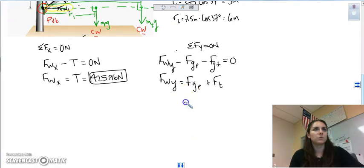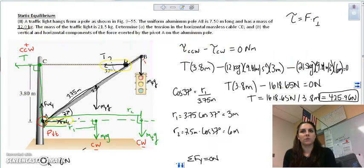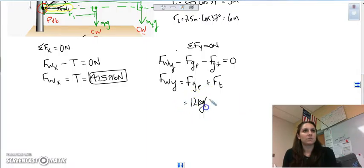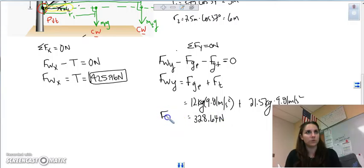The mass of the pole is 12. So 12 times 9.81 plus the traffic light, which is the 21.5, times the 9.81. And when I do that, we have 328.64 as the force of the wall Y. And there we go. Force of the wall X and Y.